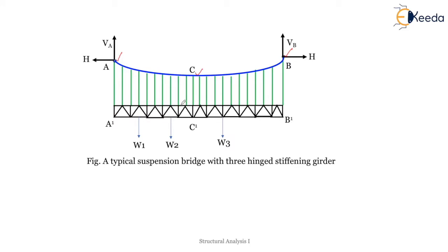This girder can be a very heavy beam or even a truss, having three hinges at the two ends and one at the center. The cable and the girder are connected by a number of hangers or suspenders. Since there are many suspenders, they create not a point load but a uniformly distributed load.